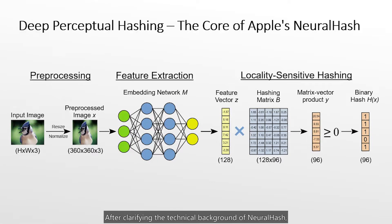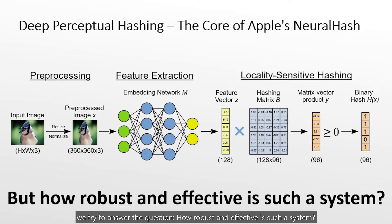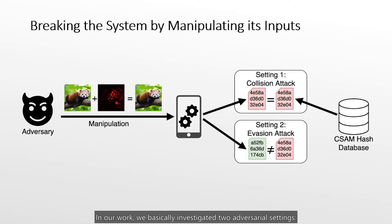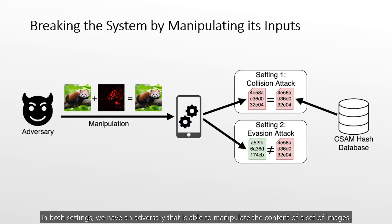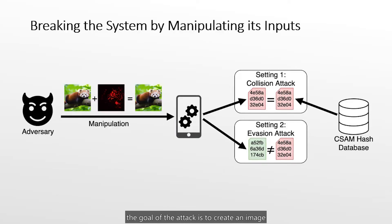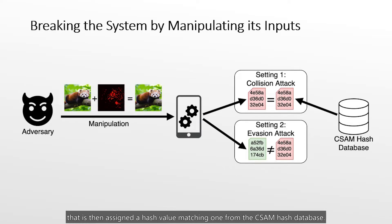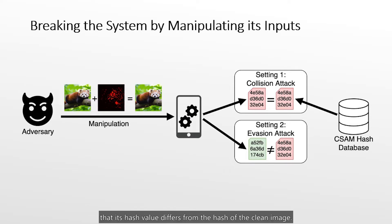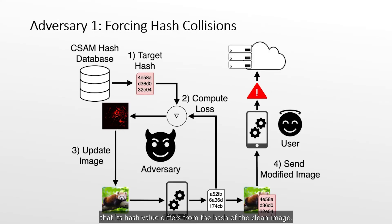After clarifying the technical background of NeuralHash, we tried to answer the question: how robust and effective is such a system? We investigated two adversarial settings: hash collision attacks and detection evasion attacks. In both settings, an adversary is able to manipulate the content of a set of images and sends these images to a target device running NeuralHash. For hash collision attacks, the goal is to create an image assigned a hash value matching one from the CSAM hash database. For evasion attacks, the image is manipulated so its hash value differs from the hash of the clean image.